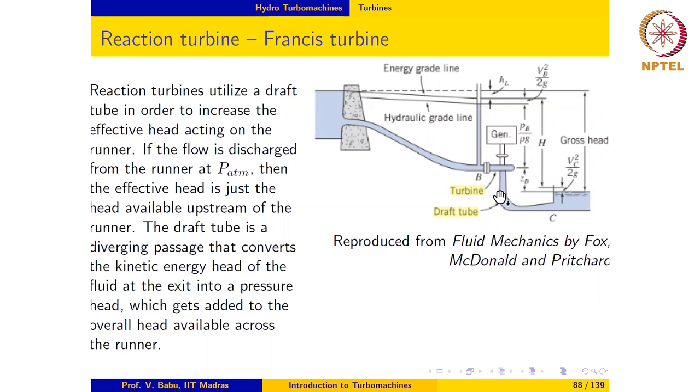When the draft tube is absent, notice that the free surface of the tail race would be in line with the exit of the runner. The effective head on the turbine would then be the difference in elevation between the free surface of the water in the reservoir and the free surface of the water in the tail race. So that would be the effective head. In other words, this would be the effective head in the absence of a draft tube. The presence of the draft tube allows the effective head to be increased in the following manner.